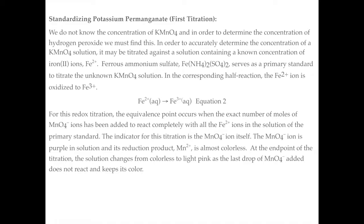The first titration we're going to do is figuring out the concentration of the potassium permanganate, because we're going to use that to determine the concentration of hydrogen peroxide. In order to accurately determine the concentration of a potassium permanganate solution, it may be titrated against a solution containing a known concentration of iron ions. Ferrous ammonium sulfate serves as a primary standard to titrate the unknown potassium permanganate solution.